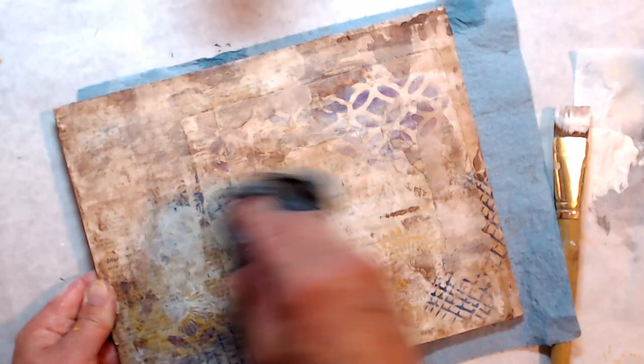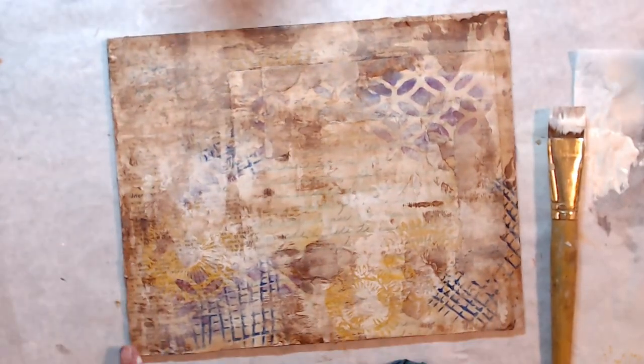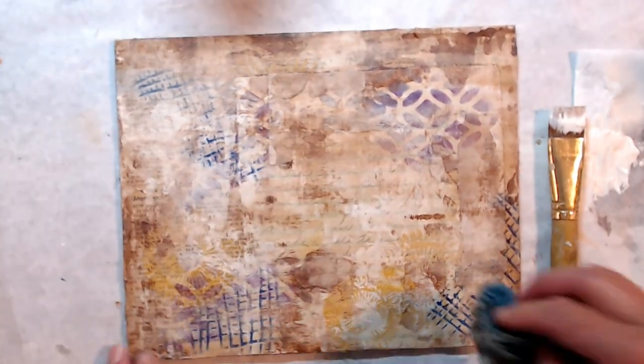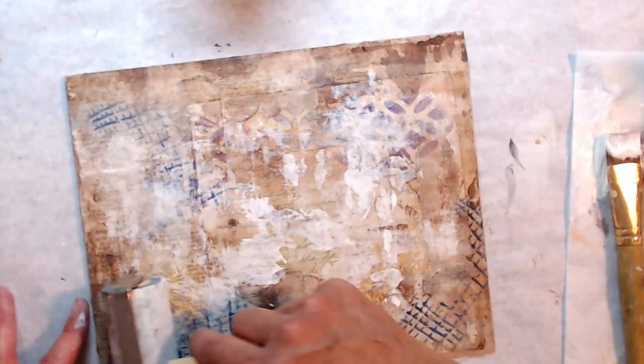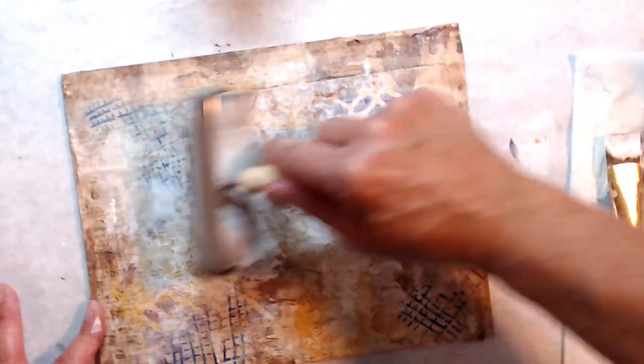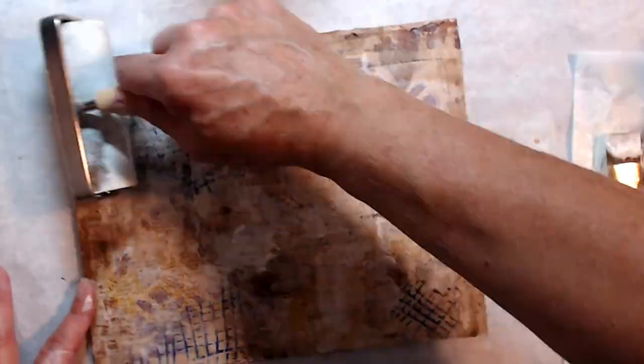Now you can see the stencil, the blue and the yellow and the purple in the background. And you see how it really works. I like it. And then when those sunflowers get put on top, watch out. It's amazing. I really like this piece.